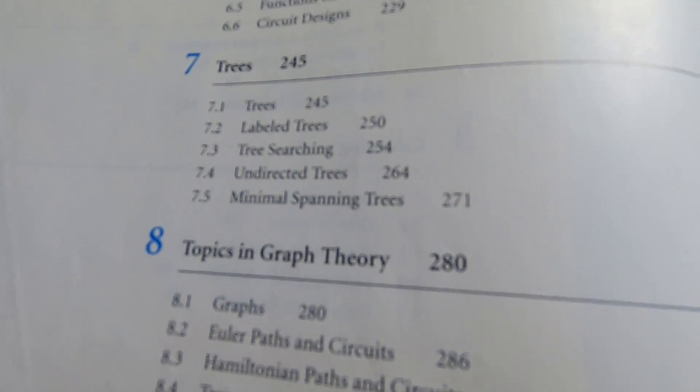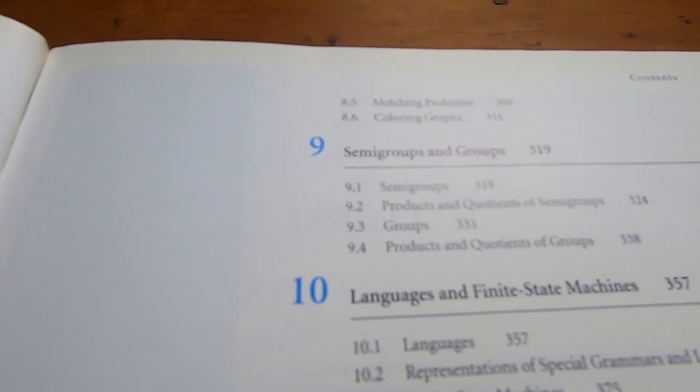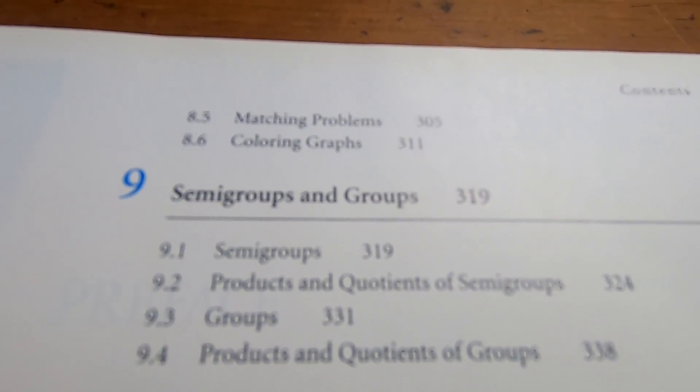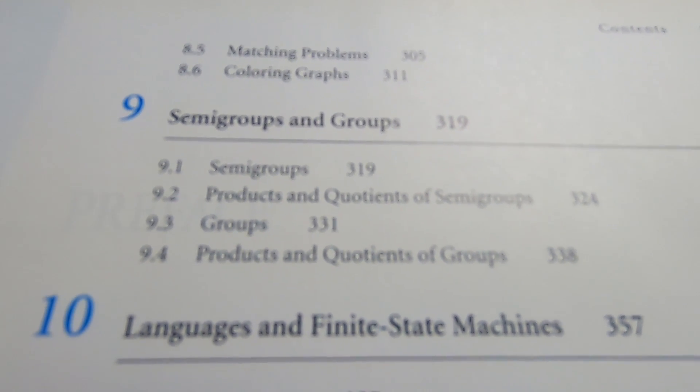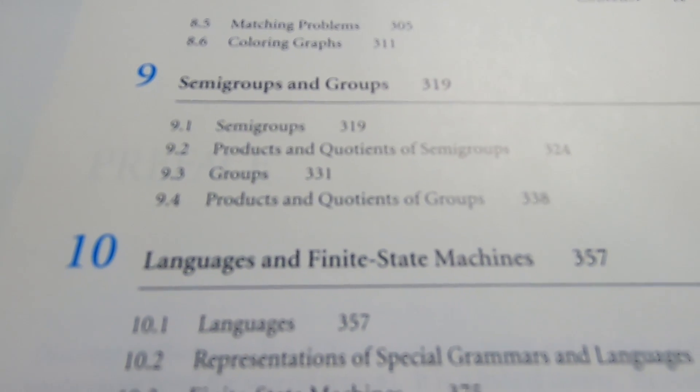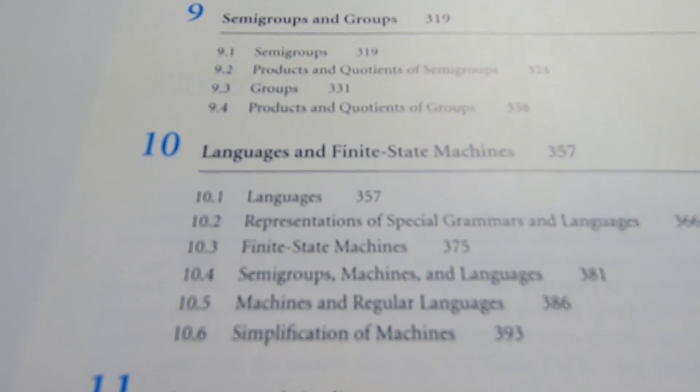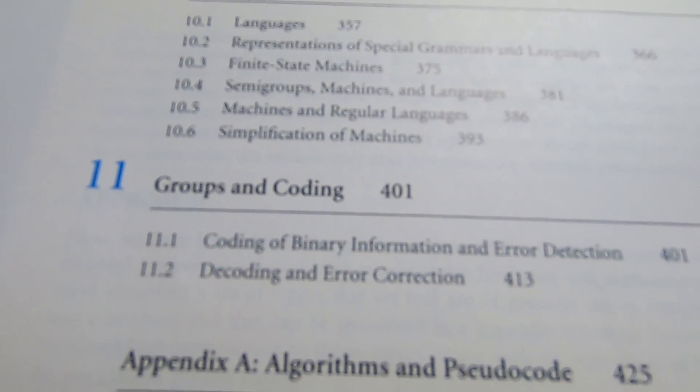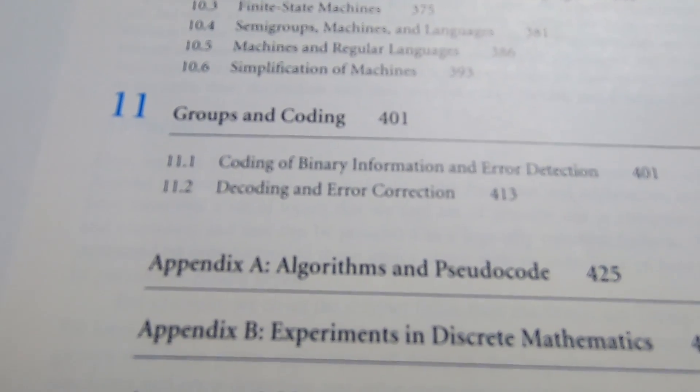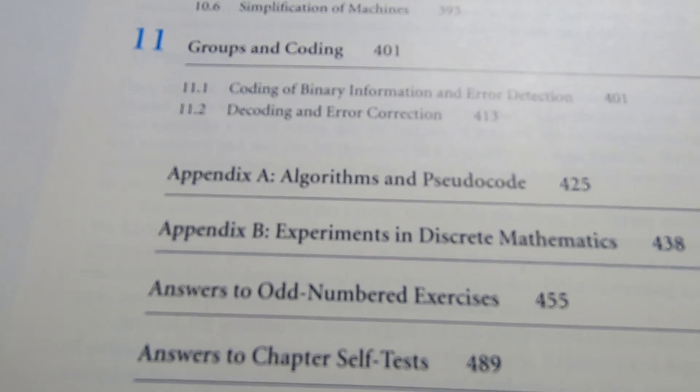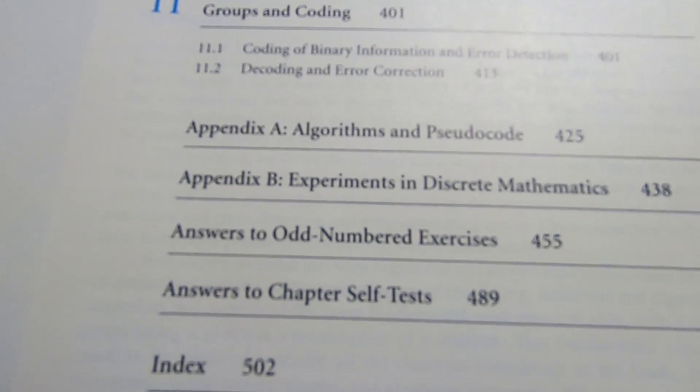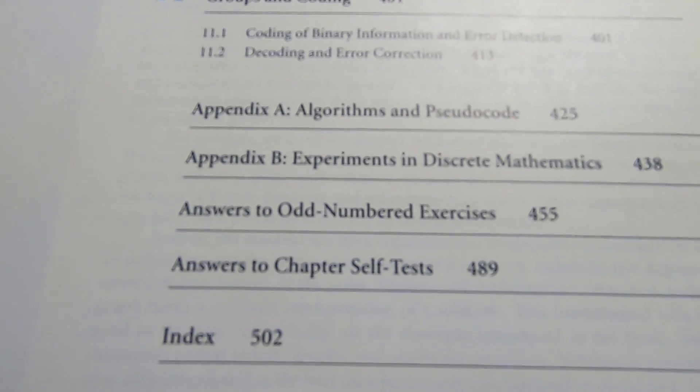I'm going to go a little bit faster here. Semi-groups and groups, languages and finite state machines, and then at the end we have groups and coding and some appendices and answers to odd numbered exercises and answers to chapter self-test and index.